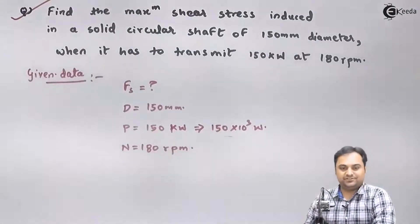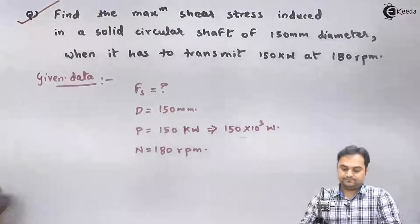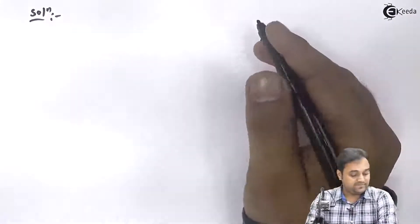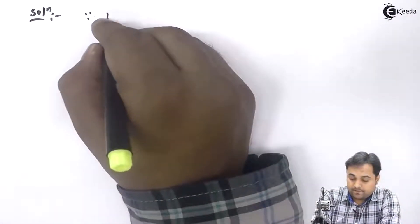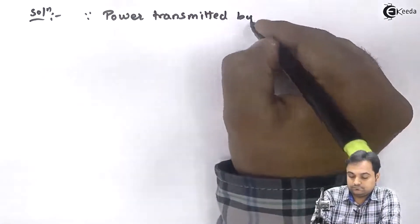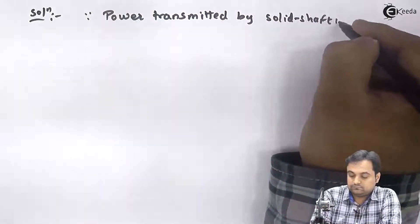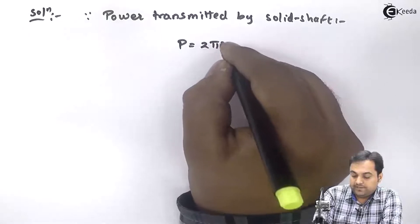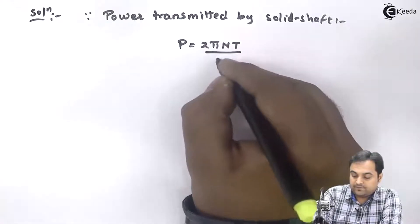Now let us try to get the solution for this. I will start with power, since power transmitted by solid shaft is given by P is equal to 2 pi NT upon 60.